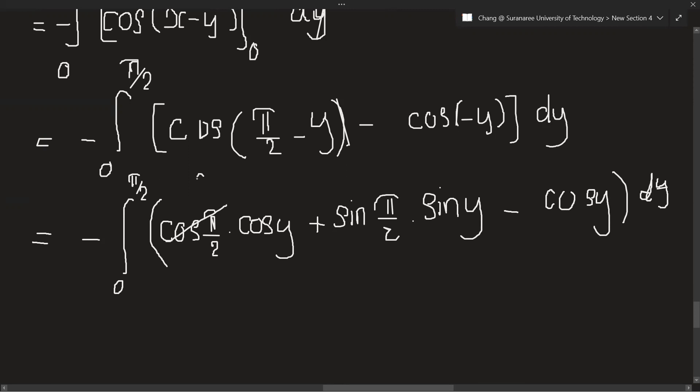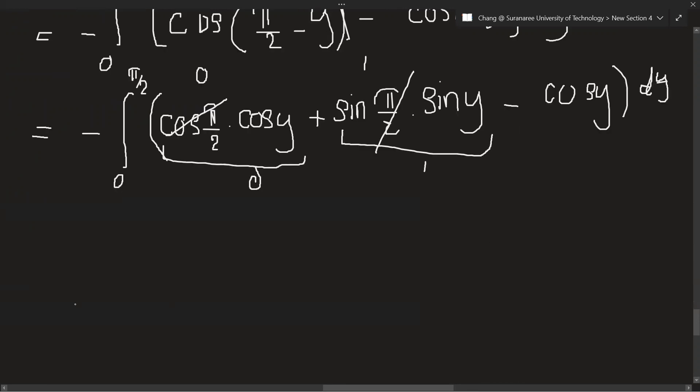The integral from 0 to pi over 2. All right, so first cos pi over 2 is zero. So sine pi over 2 is 1, so this will get zero and this will get 1. It will just remain sin y.